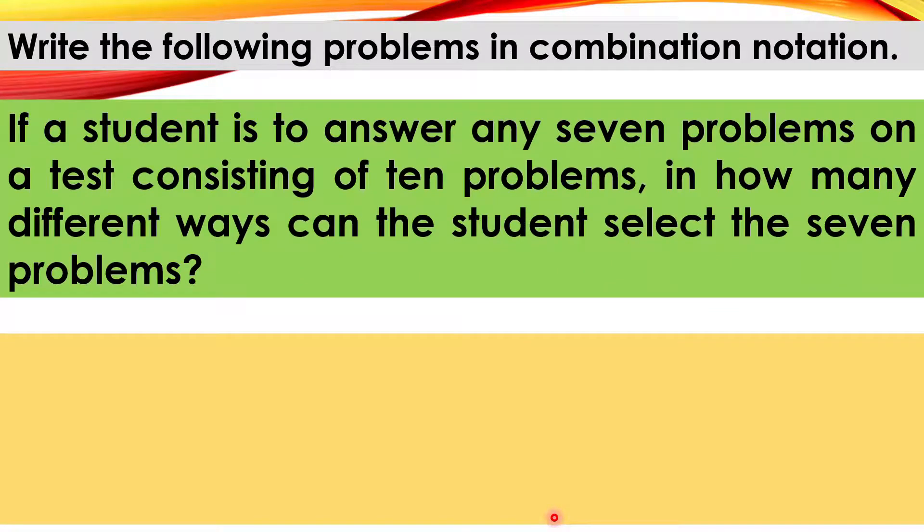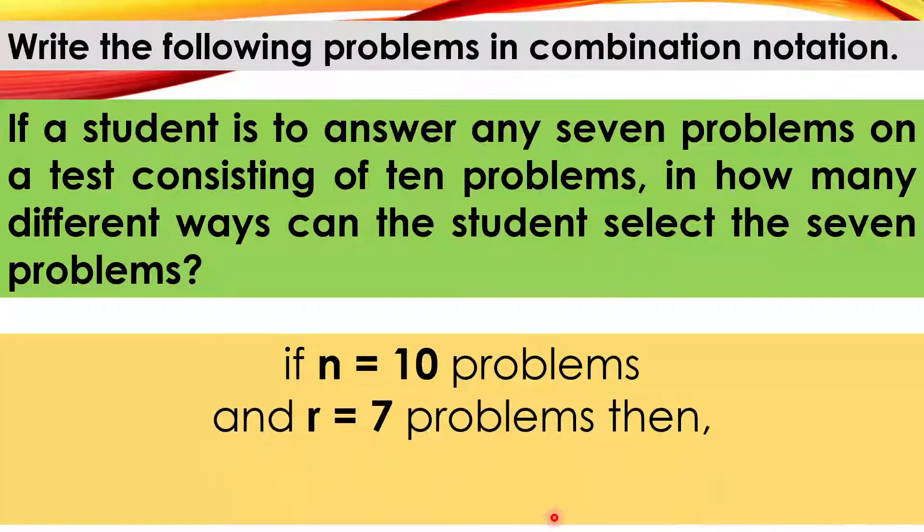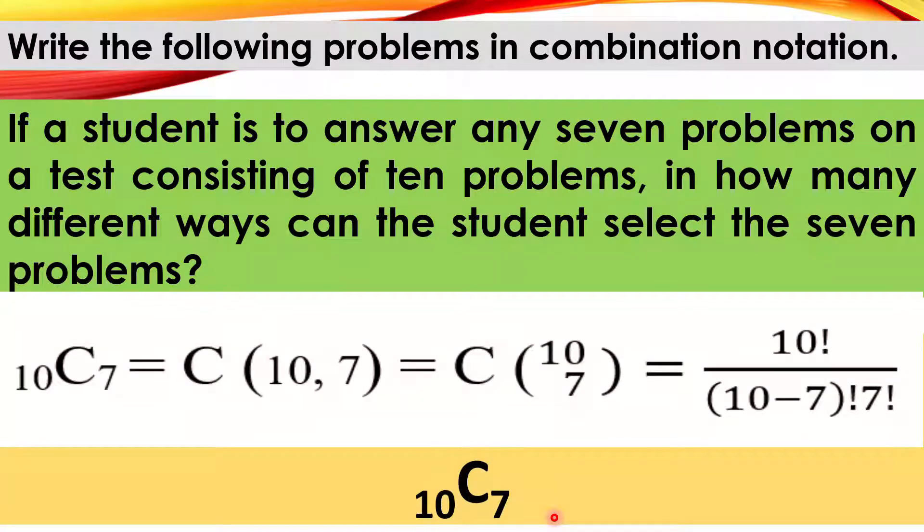If a student is to answer any 7 problems on a test consisting of 10 problems, in how many different ways can the student select the 7 problems? Since we have n is equal to 10 problems and r is equal to 7 problems, then here is the answer.